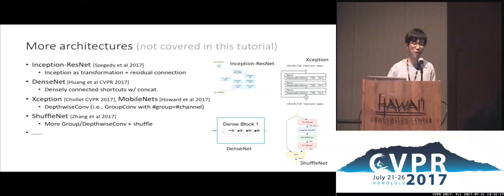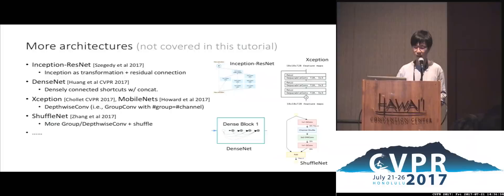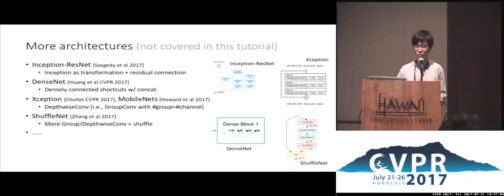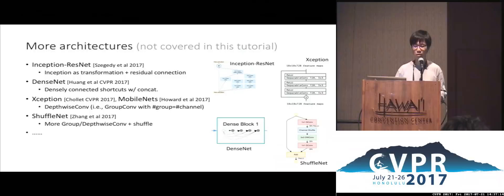There are many architectures developed recently not covered in this tutorial. For example, Inception-ResNet uses inception as the transformation function and trains with the help of residual connections. DenseNet uses densely connected shortcuts merged by concatenation. Also at this CVPR, Xception and MobileNet are both driven by depth-wise convolutions, where the number of groups equals the number of channels. ShuffleNet uses even more group or depth-wise convolutions with shuffling to reduce model complexity.